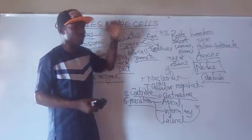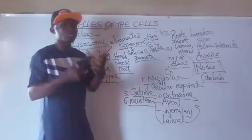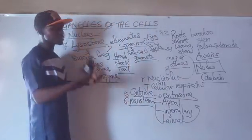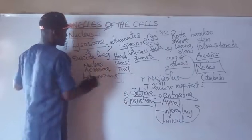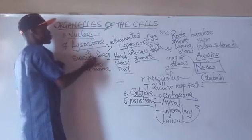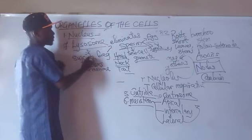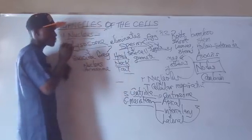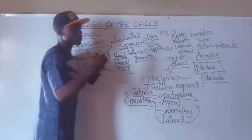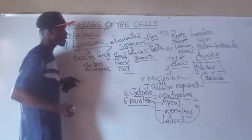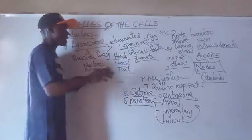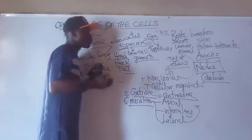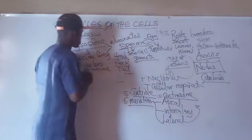Fertilization occurs in the fallopian tube of the woman. The lysosome is also known as the suicide bag. It is called suicide bag because it helps in eliminating useless waste from the body of the organism. It also helps in getting rid of foreign bodies like viruses, fungi, and bacteria — it can eliminate any foreign entities that bring harm to the body.